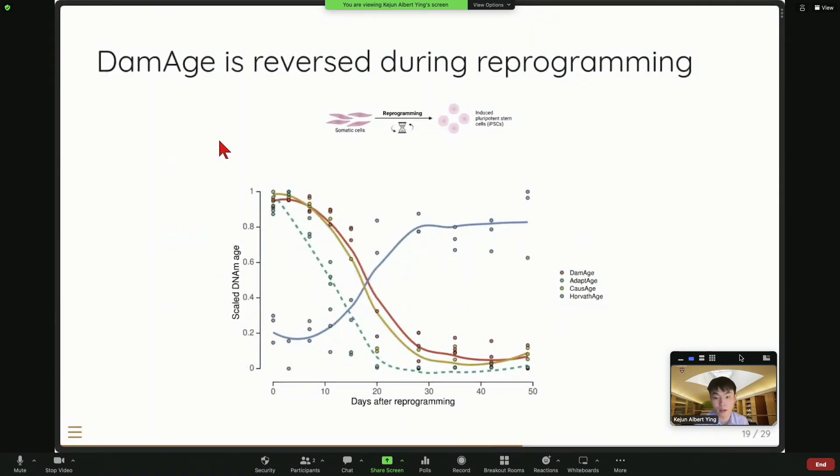And then we tested our clock in different kinds of interventions. So first, when we tested reprogramming, it shows that the DamageAge and CauseAge, the predicted age is decreased during the cellular reprogramming. But the AdaptAge again shows the different trend. They're increasing during reprogramming.